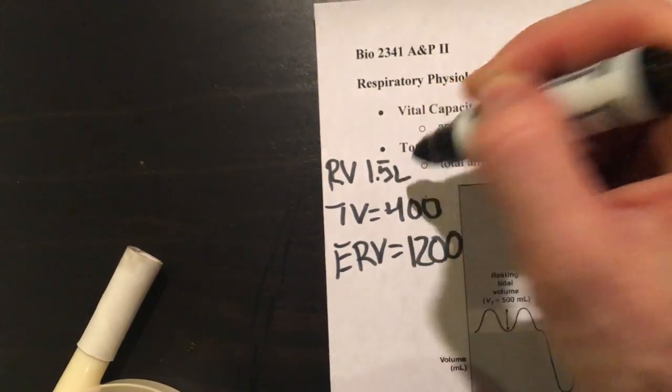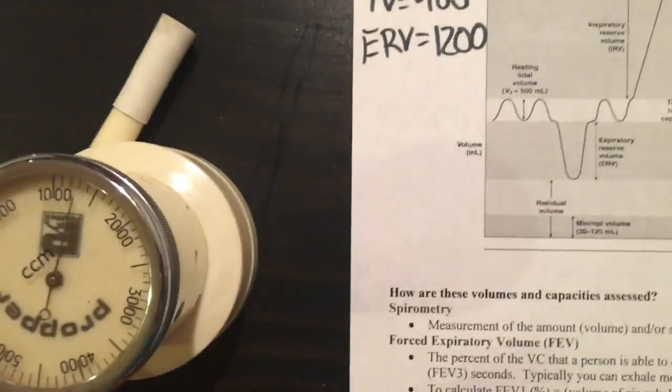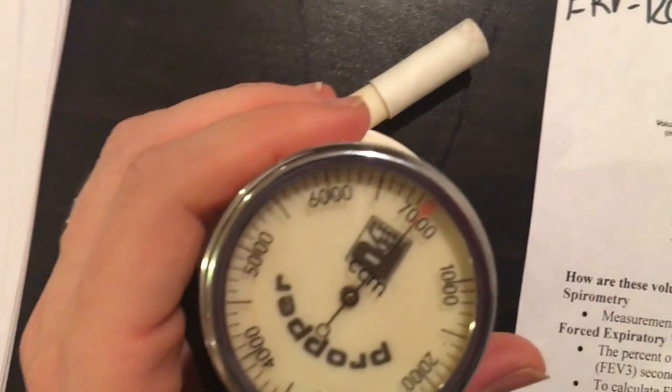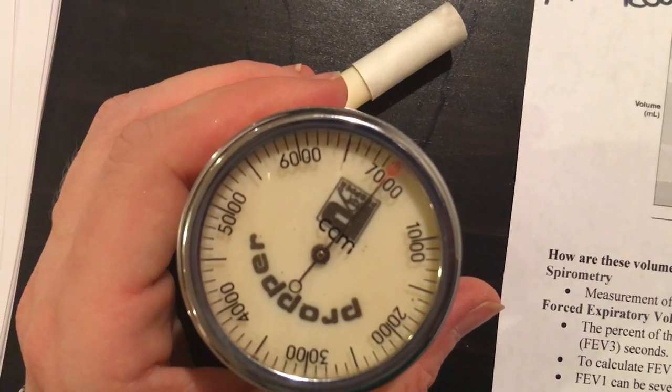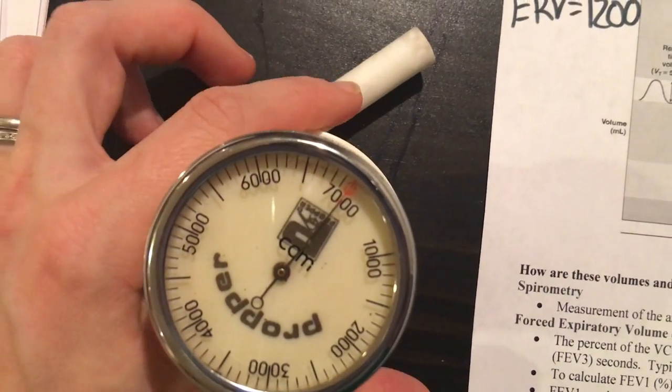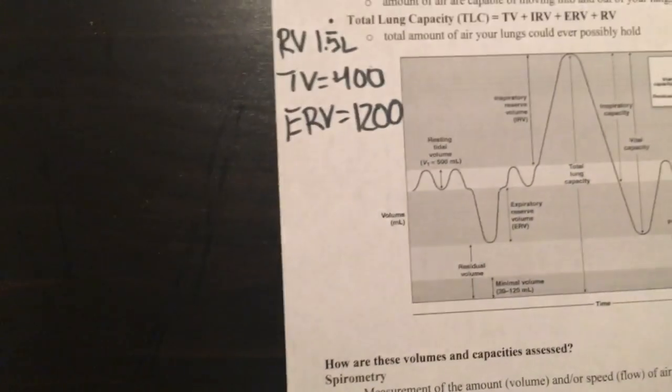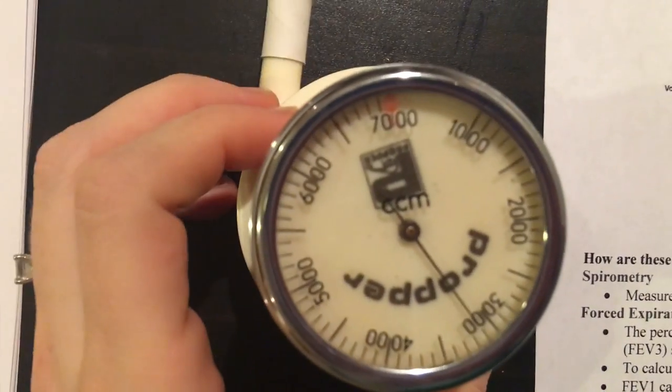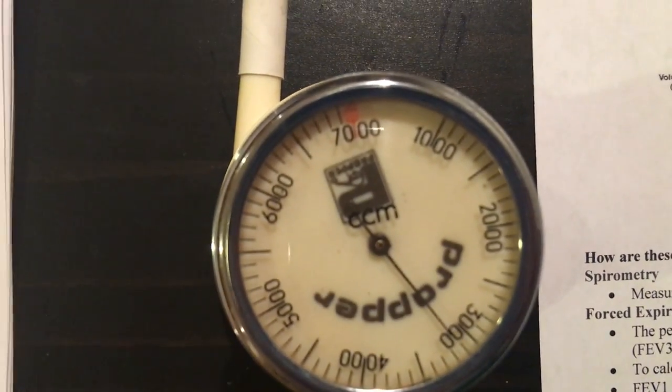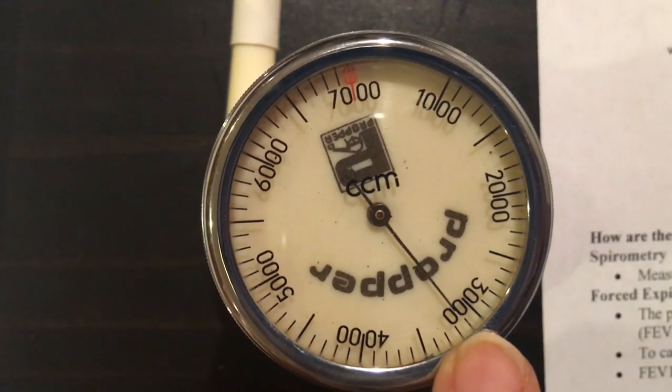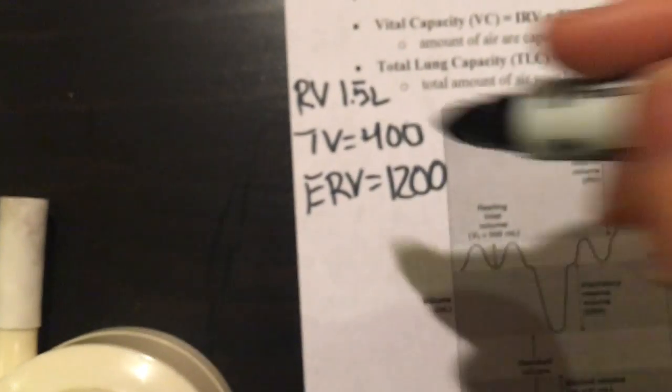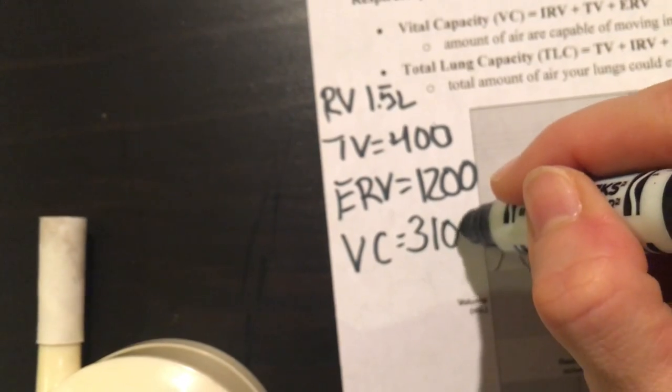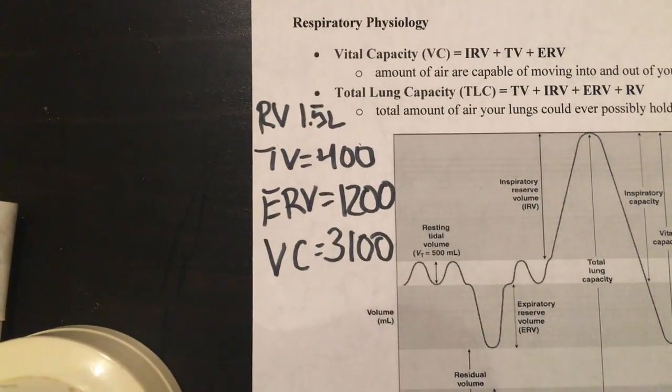Let's take the vital capacity now. Reset the spirometer to zero. We're set to zero again. Now I'm taking a deep breath and then I'm going to exhale completely into this tube. All right, not bad. So we went from zero to that, that looks to me like 3,100 milliliters. So vital capacity was equal to 3,100 milliliters for me.